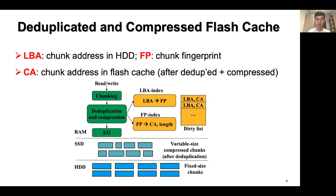A general architecture for a deduplicated and compressed Flash cache is shown below. Here, we use LBA (logical block address) to represent the chunk address in HDD, FP (fingerprint) to refer to the chunk fingerprint, and CA (chunk address) to refer to the address of cached chunks in the Flash cache. To manage the deduplication and compression functionalities, we need two index structures, namely LBA index and FP index. The LBA index records the LBA to the FP of the corresponding chunks. The FP index transforms an FP to the CA and the compressed length of the cached chunk. For write-back cache, an additional dirty list is used to maintain the mappings for the dirty data. Inside the SSD, we store cached compressed chunks that are of variable size after deduplication. Inside the HDD, we store the fixed-sized original chunks.